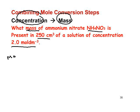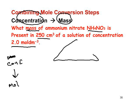We're going to find out what mass we have of ammonium nitrate present in 250 cubic centimetres of a solution with a concentration of 2.0 mol per cubic decimetre. The first thing I'm going to do is change from concentration into moles. Let's use the rearrangement triangle again — concentration is expressed in terms of moles per cubic decimetre.